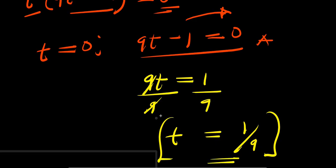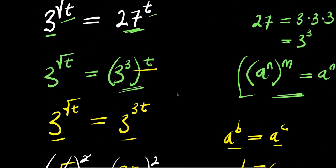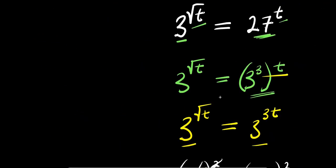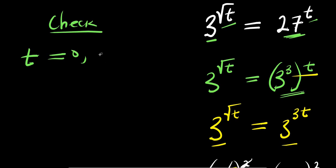So we have t equals 1 over 9 and t equals 0 as the two different solutions. Now the next thing we can do is check each of the solutions. Let's copy the problem: 3 power root t equals 27 power t, and we check for t equals 0 and t equals 1 over 9.